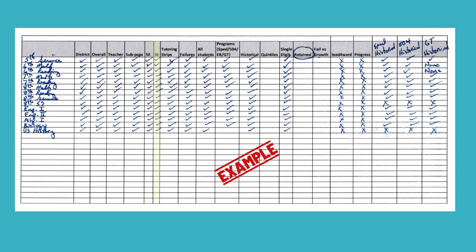Your item analysis — and in Eduphoria, you can get it overall or you can get it by student to see which students picked which answer choices and wonder why they picked those. Then tutoring strips — that's just a standard report in Eduphoria. I want to know which kids failed this thing, because bottom line, we're going to have to create a solution for that.